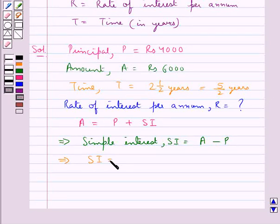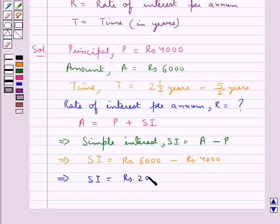That is SI = Rs. 6000 - Rs. 4000, which means simple interest is equal to Rs. 2000.